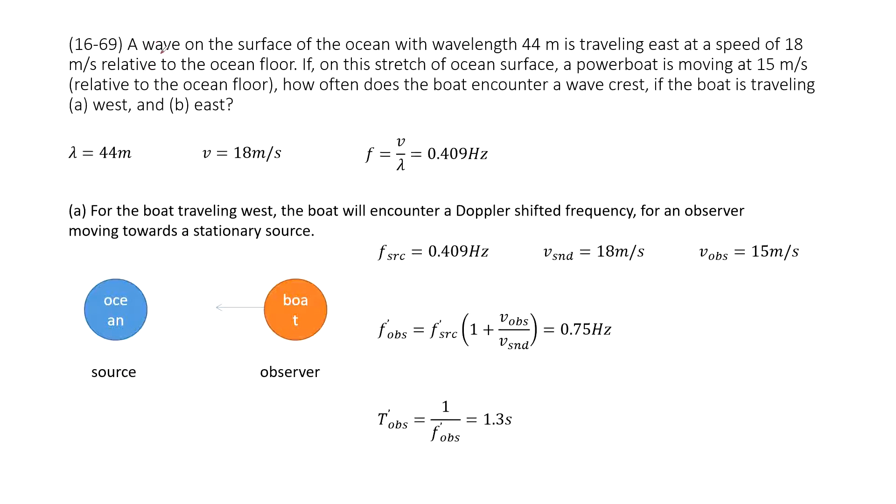We can see the wave on the surface of the ocean. The wavelength is given, and it tells us it travels east. And the speed of this wave is given as 18 meters per second relative to the ocean.